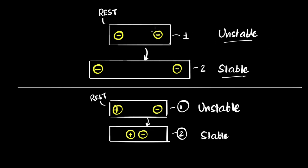Now let's connect this to energies. My first question is: as I go from arrangement one to arrangement two, what happens to the total energy of the particles? The thing I'm going to use is the law of energy conservation — energy can neither be created nor destroyed. When I went from here to here, I ask myself: did energy get added or removed? The answer is no. In a vacuum, no energy was added or removed, so the total energy must stay the same. The total energy did not change.